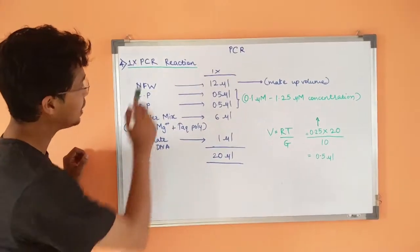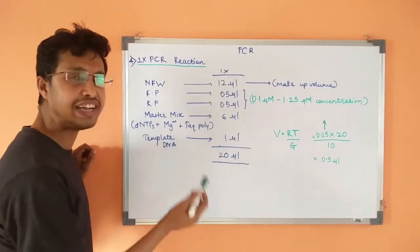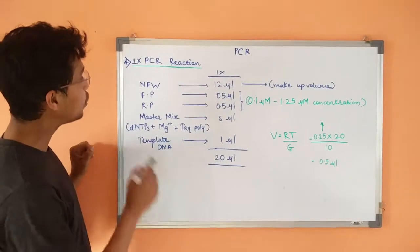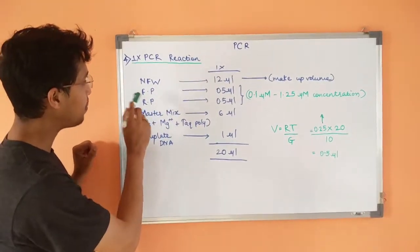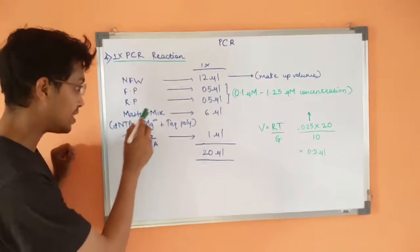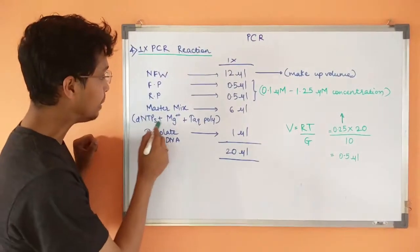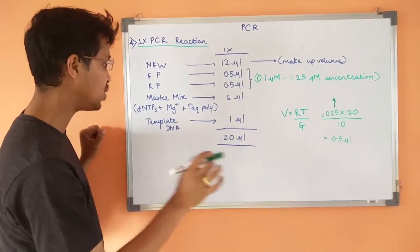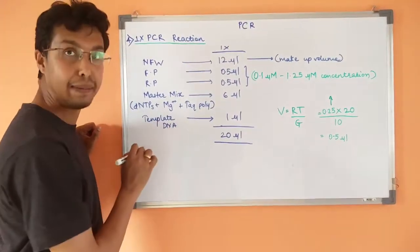First of all, we will start with 1x PCR reaction. Considering that my reaction volume is of 20 µL, I am going to add nuclease-free water, forward primer, reverse primer, master mix which contains dNTPs, magnesium and Taq polymerase at particular concentration which is already given in that particular kit, and then template DNA.